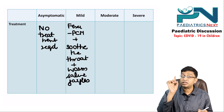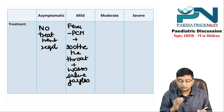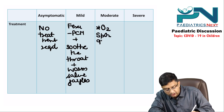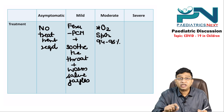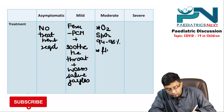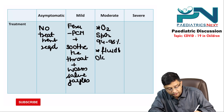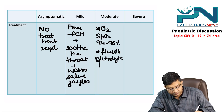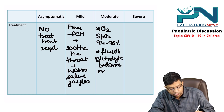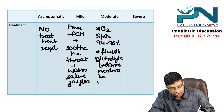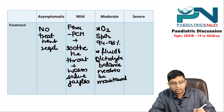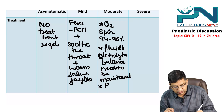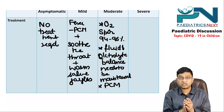In moderate cases, since SpO2 is less than 94%, the first priority is to give oxygen and maintain SpO2 between 94–96%. Fluid and electrolyte balance must also be maintained in children. For fever, paracetamol is given.